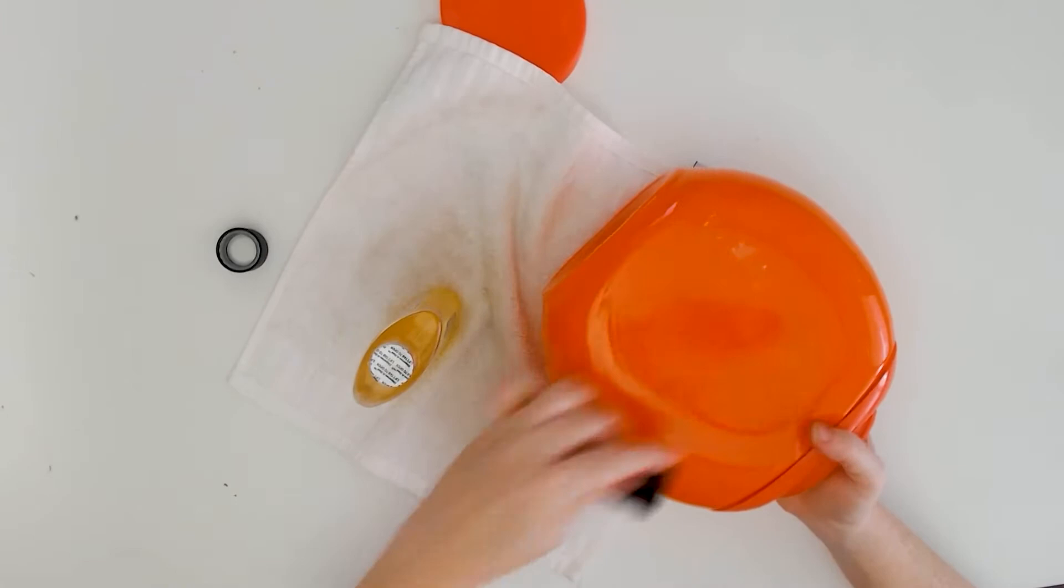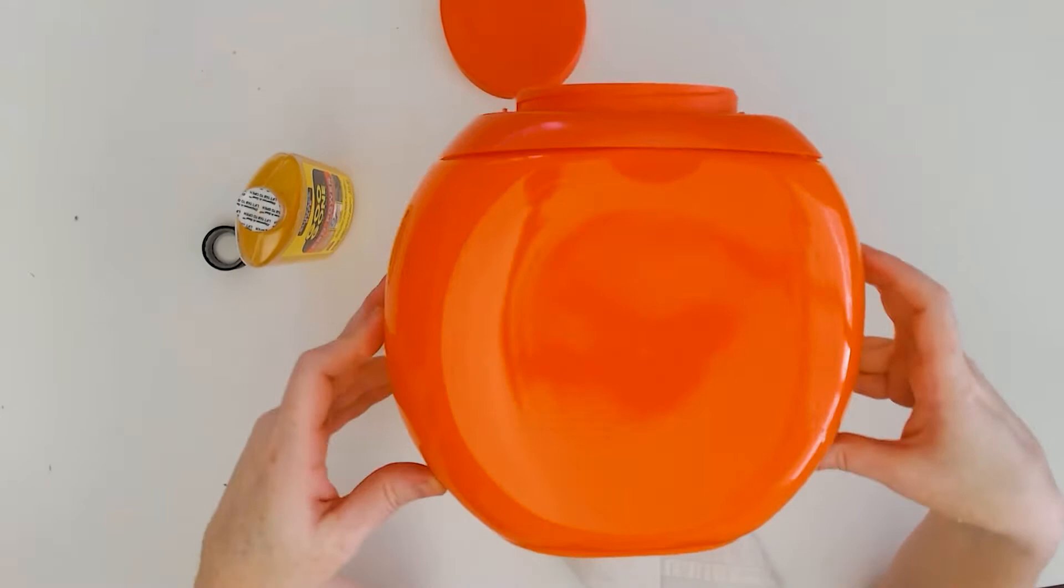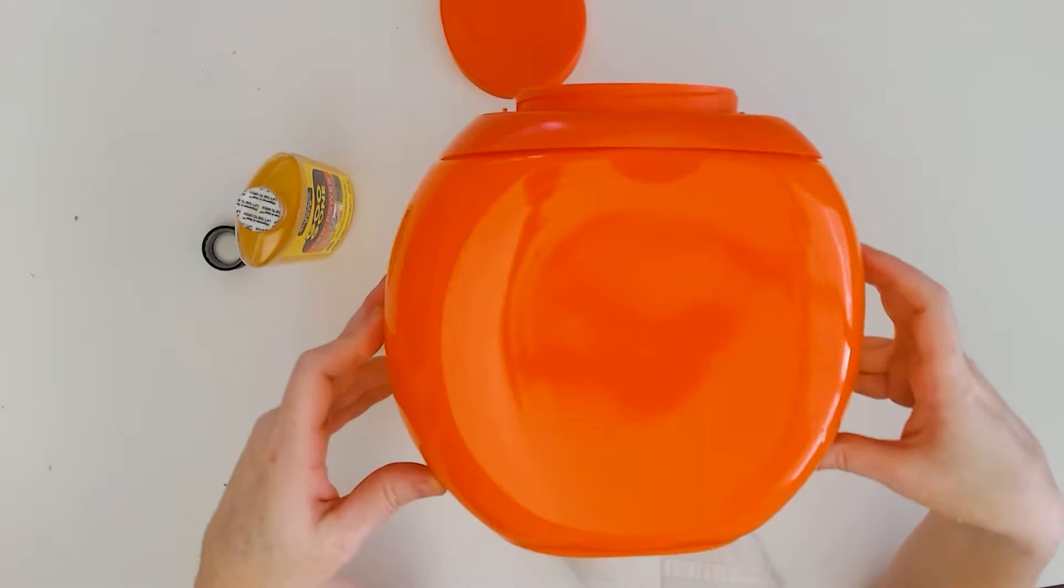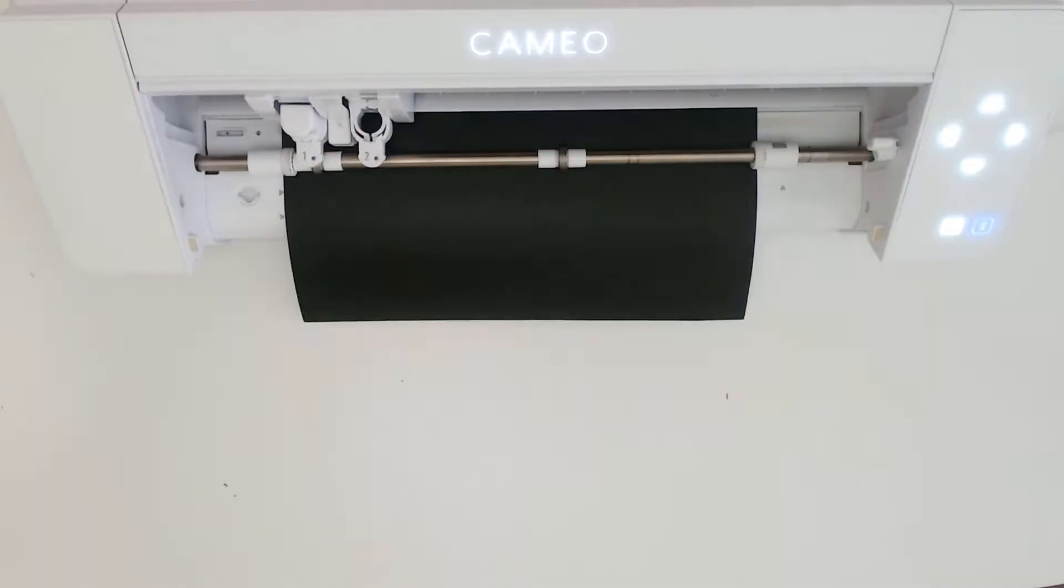Once you've removed the label, there's a label on the top lid and the front and the back of the container. You want to wash the container really well with soap and water to remove the Goo Gone residue. Then take your jack-o'-lantern face. I cut this face with Oracle 651 permanent adhesive vinyl on my Silhouette Cameo 4.